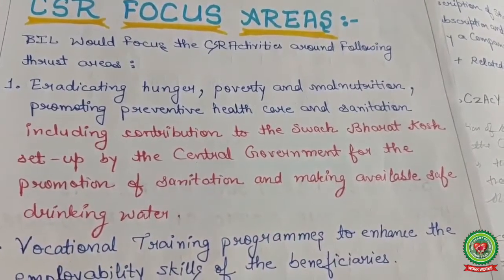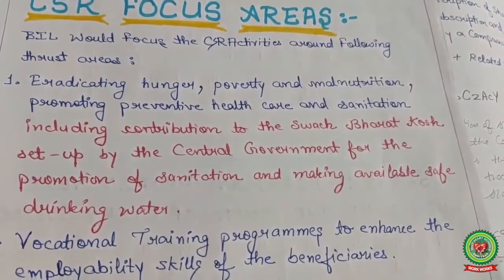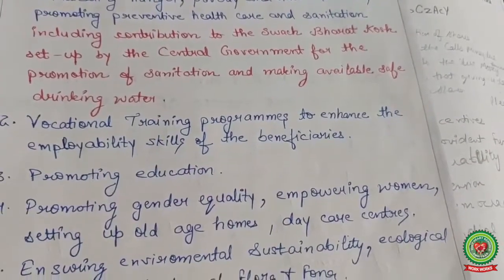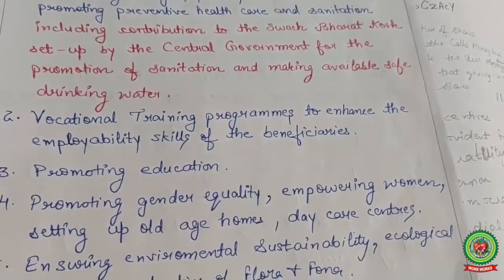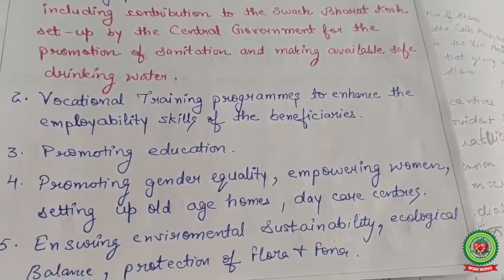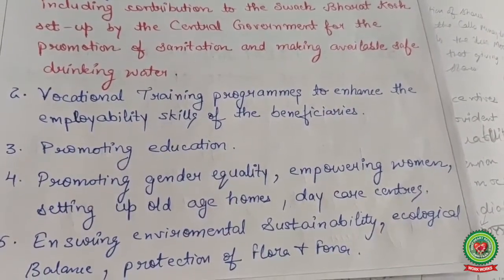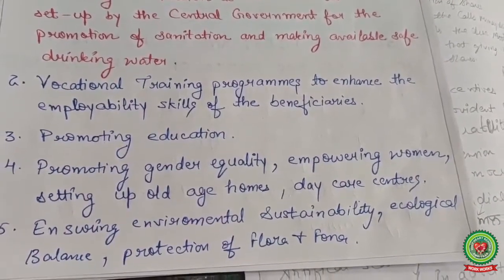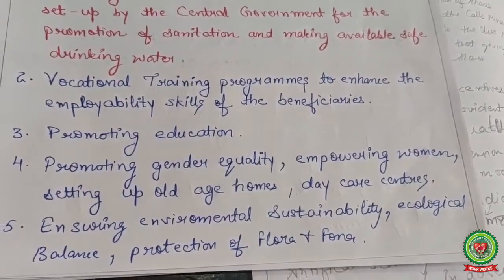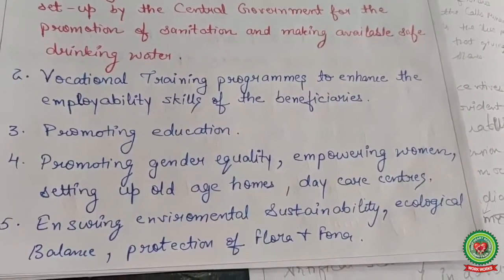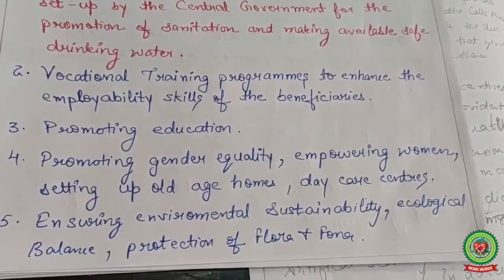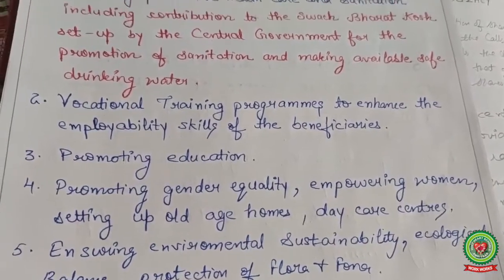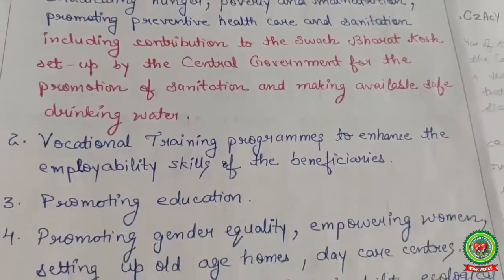Bata's CSR includes contributing to the Swachh Bharat Kosh set up by the central government for sanitation and safe drinking water. Second: vocational programs to enhance employability skills. Third: promoting education, gender equality, and empowering women. Fourth: setting up old age homes and daycare centers. Fifth: ensuring environmental sustainability, ecological balance, and protection of flora and fauna. These are Bata's responsibilities toward society.